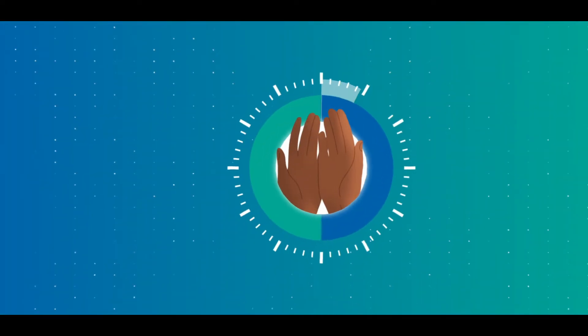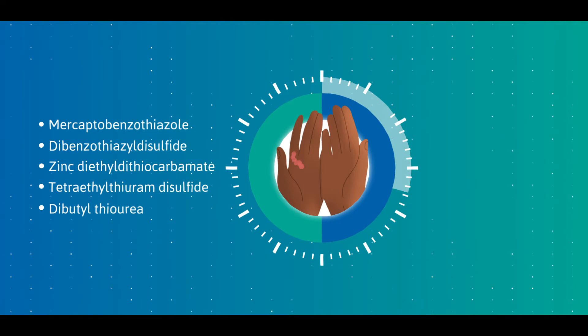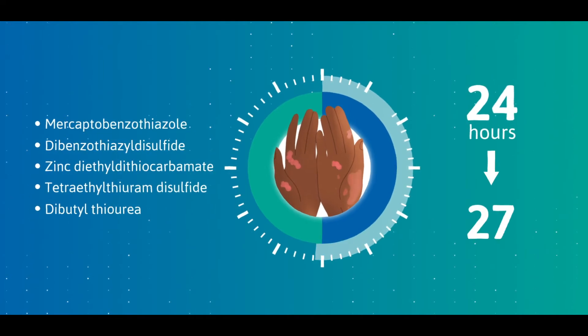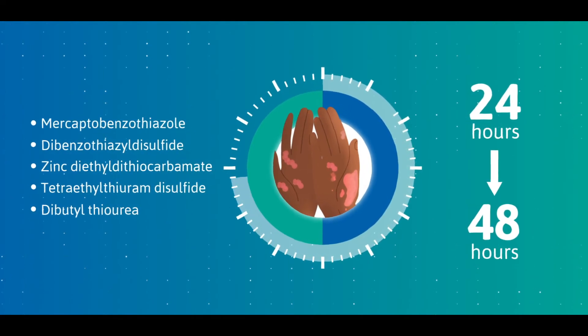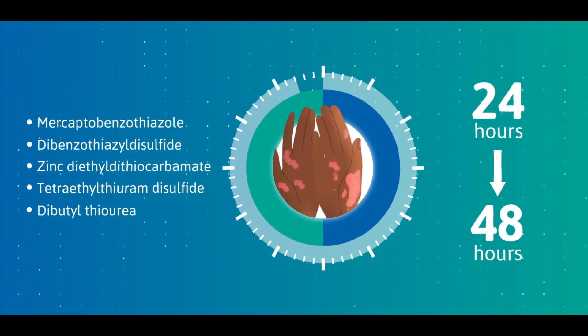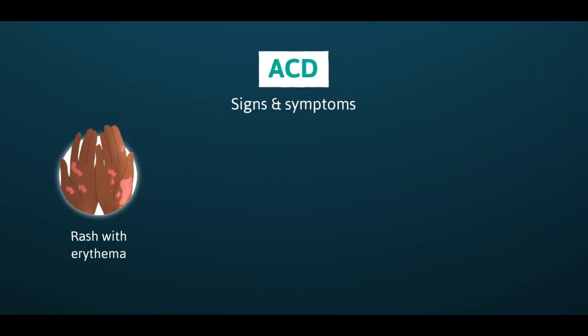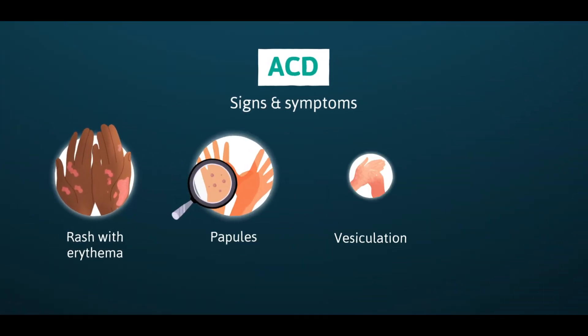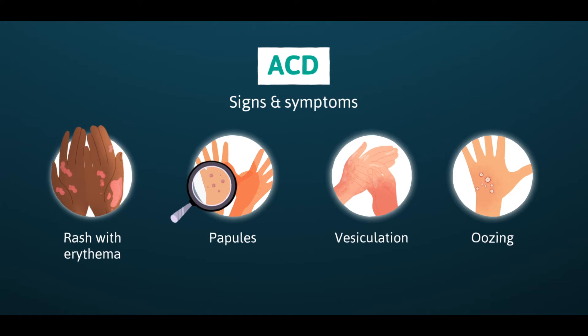The symptoms appear with exposure to these chemicals. It may take 24 to 48 hours from the time of exposure for the reaction to develop. Characteristic symptoms include a rash with erythema, papules, vesiculation and oozing.